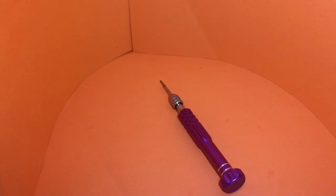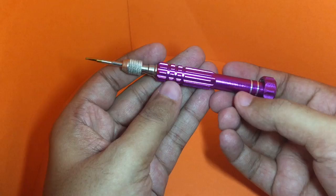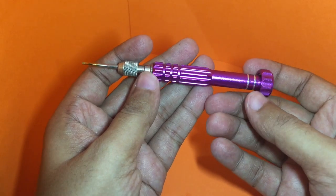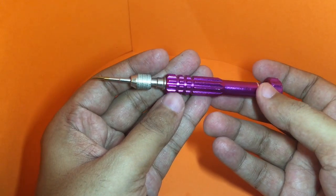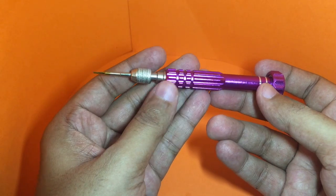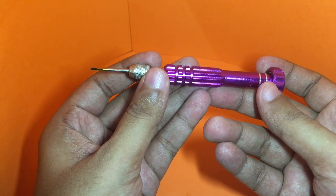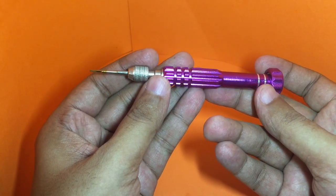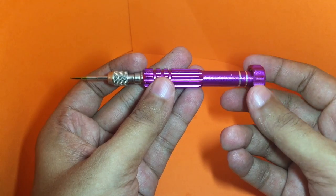Let's take a look at this multi screwdriver. It's specially meant for repairing watches and costs around 200 rupees or four dollars. You can see this rotating knob at the back.